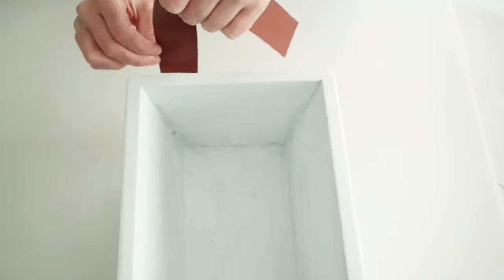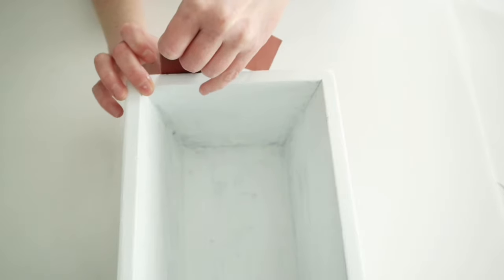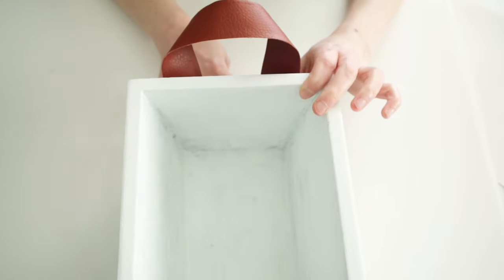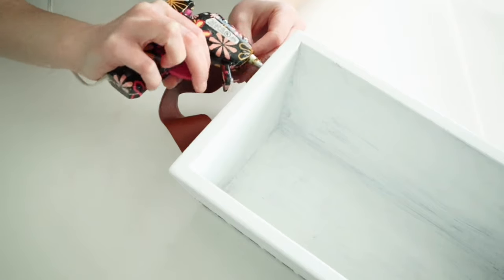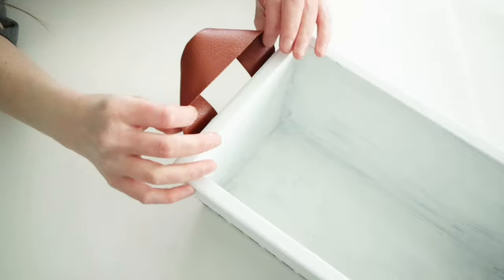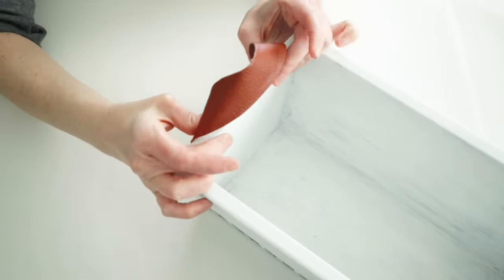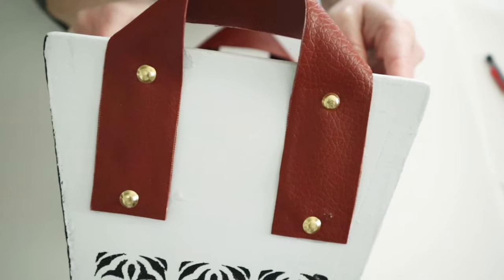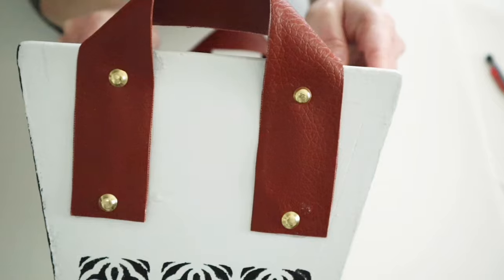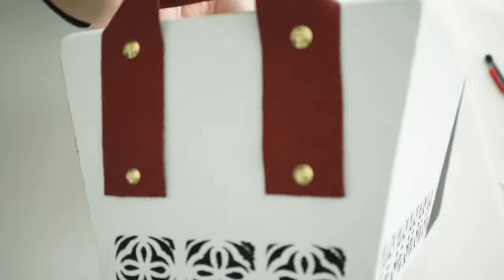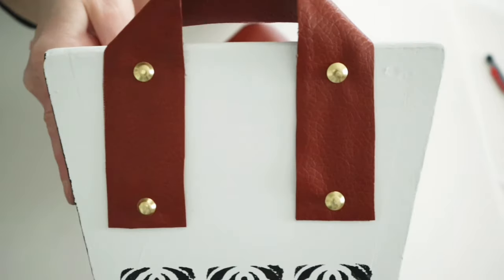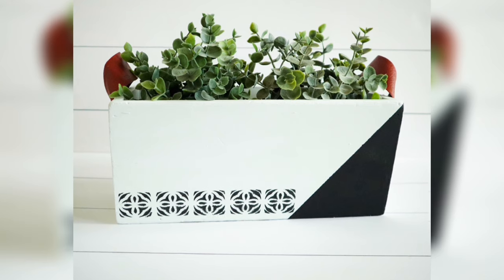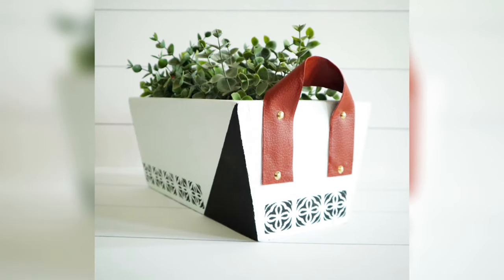Then I'm going to go ahead and hot glue both of those handles to the box. And finally, for this project, I'm going to be using some of these gold thumbtacks from Dollar Tree. And all I did was just hammer those into the little handles. You could use this box for many things, but I just added in some little plants, and I definitely love how it turned out.